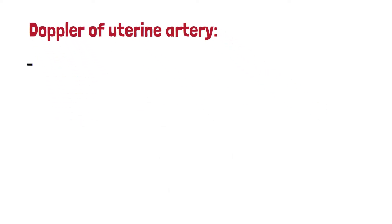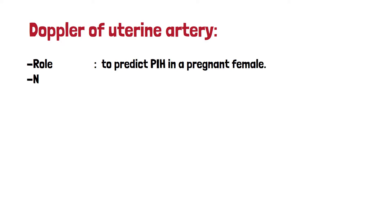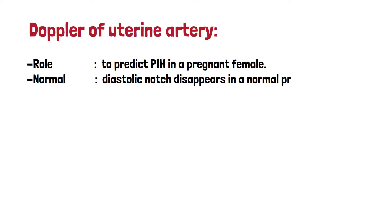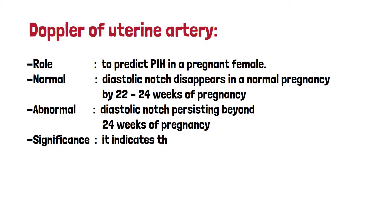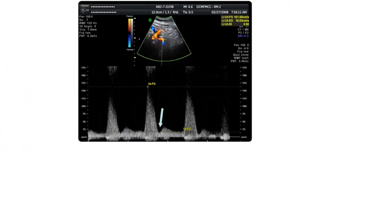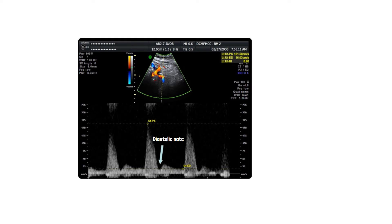Now, Doppler of the uterine artery. Its role is to predict pregnancy-induced hypertension in pregnant females. Normally, the diastolic notch disappears by 22-24 weeks of pregnancy. In abnormal cases, the diastolic notch persists beyond 24 weeks. In the waveform graph, you can see the systolic peak on the left, the diastolic peak on the right, and the diastolic notch. Its significance is that it indicates the patient may develop pregnancy-induced hypertension in future.